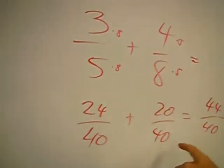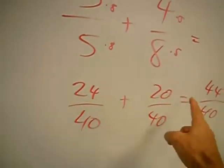5 times 4, 20, so then you add those across, giving this.